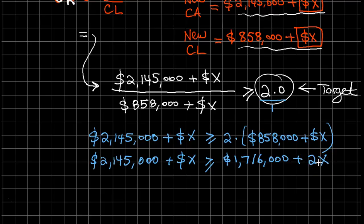I will move all the X's onto the right hand side and all the numbers onto the left hand side. I need to subtract $1,716,000 from $2,145,000, and that should come out to $429,000.